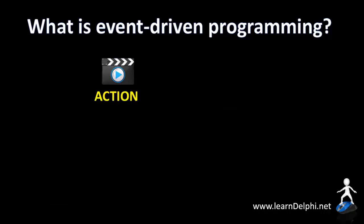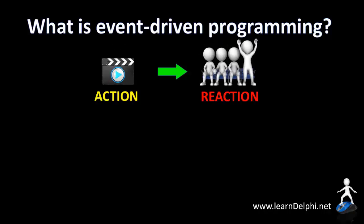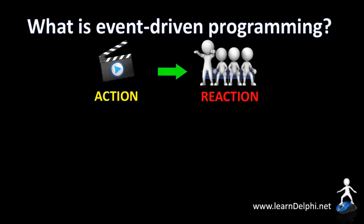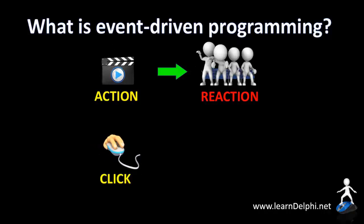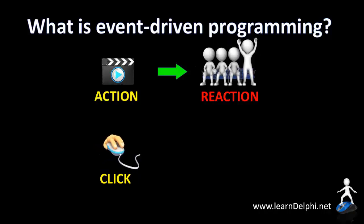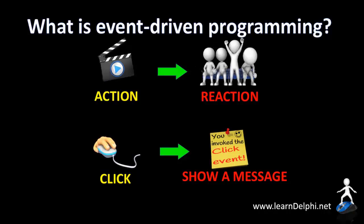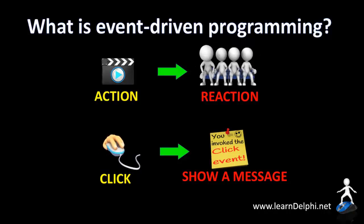An event-driven programming language like Delphi also requires action. When an action is performed, a reaction will follow. An example of an action in Delphi is when a user clicks on a button. The click action performed by the user on a button causes a reaction — for example, it may cause a message to show, or a calculation to be performed, or data to be saved to a database.